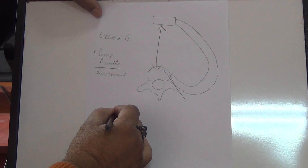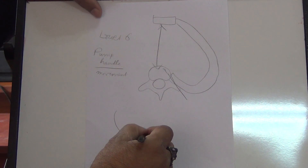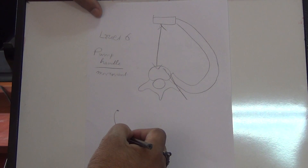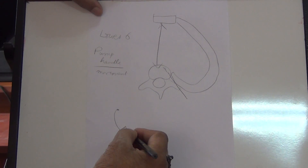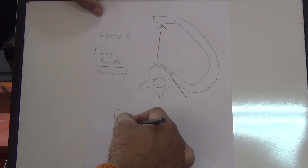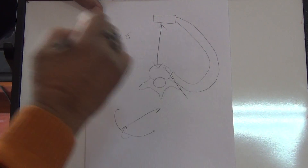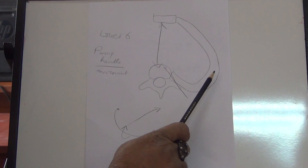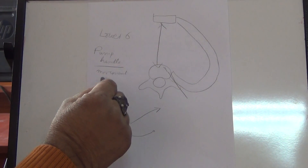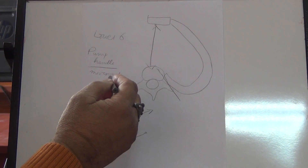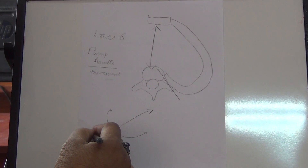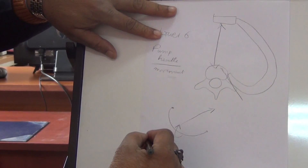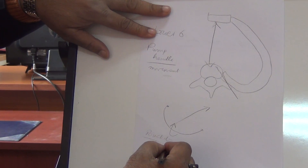The upper ribs move like a bucket handle - they are attached to the vertebra and to the sternum, and they move up, increasing the transverse diameter of the chest. The principle to immobilize the ribs is that if you tie the lower six ribs, the pump handle movement stops, and since the bucket handle movement occurs after the pump handle movement, it will also stop.